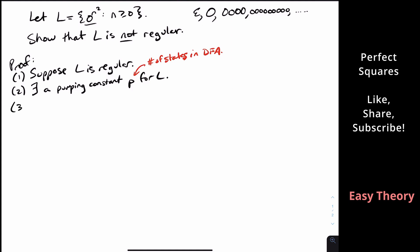The next step is to pick a string that is in the language and has length at least P. So we choose W = 0^(P²). Since P is an integer, P² is a perfect square, so this string is inside L. And P² is larger than P because P² = P × P. So this string satisfies both requirements.